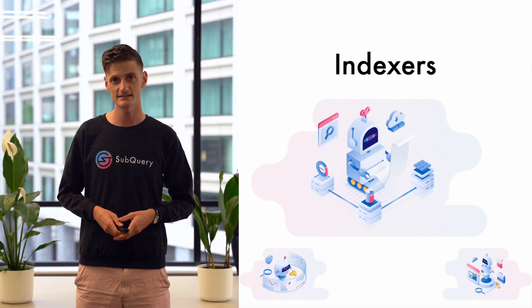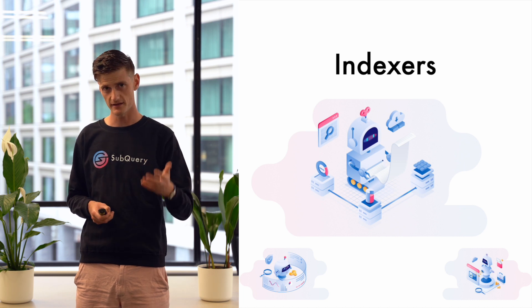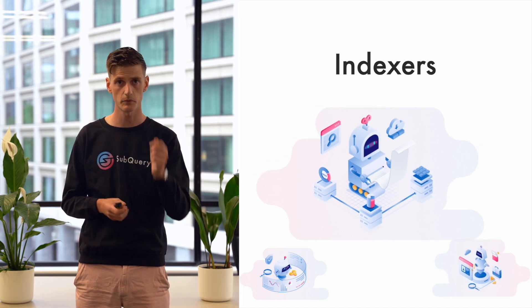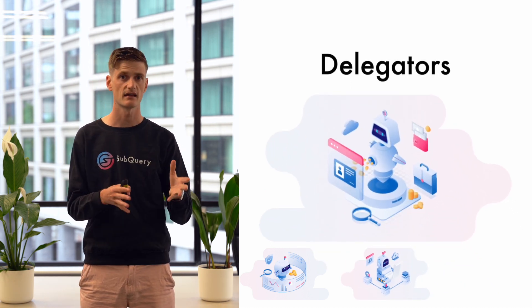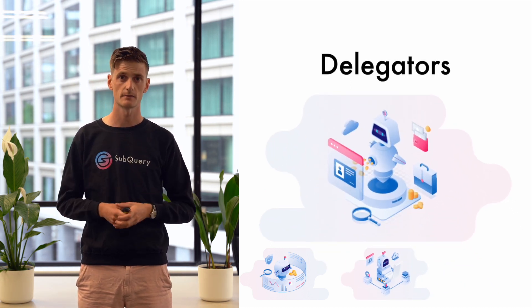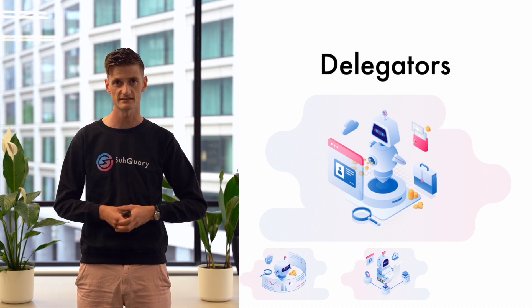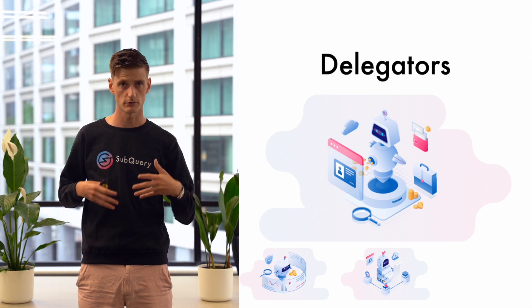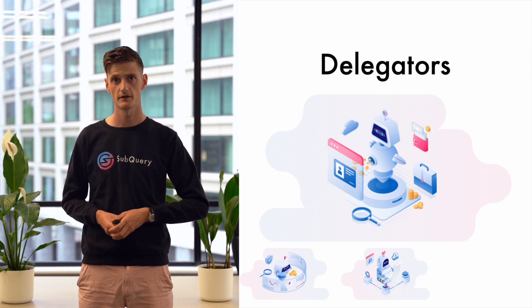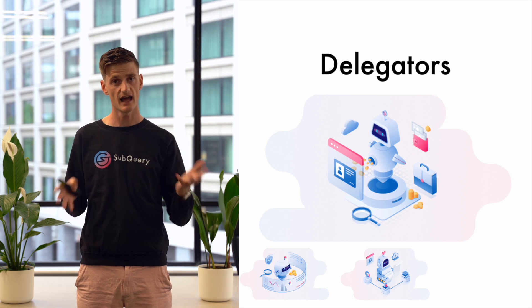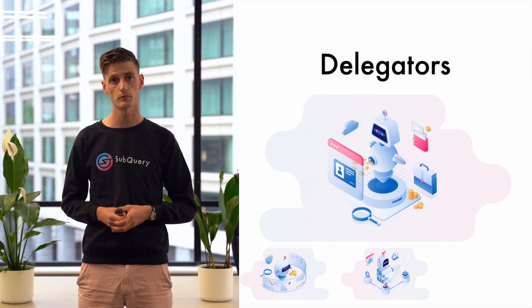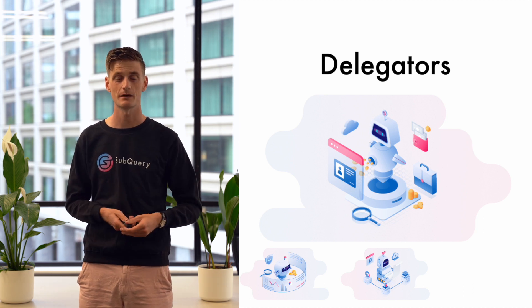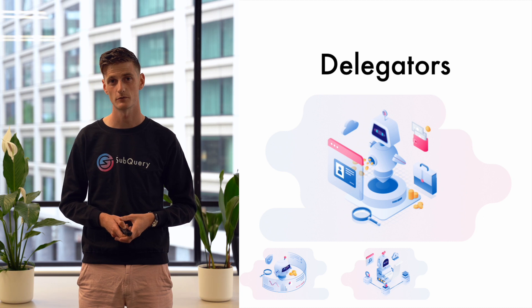The amount that indexers have staked is quite important, and that brings me to the third and final major participant: delegators. Delegators support their favorite indexers by delegating their own spare subquery tokens to support those indexers. Because the more subquery tokens an indexer has staked, the more rewards they can receive. Delegators earn a cut of this reward, which is why they support indexers — they can earn yield off the subquery network and put their spare tokens to work.